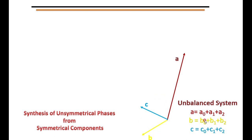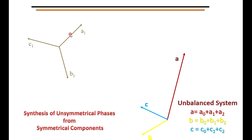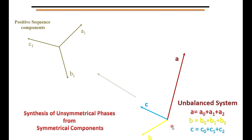This unbalanced system can be resolved into its symmetrical components for analysis purposes. First, I am extracting the positive sequence component from A, B, and C — giving A1, B1, C1. You can observe that A1, B1, C1 have the same magnitude and are displaced by 120 degrees, with phase sequence A, B, C — same as the original unbalanced phasor. This is what we call the positive sequence component.